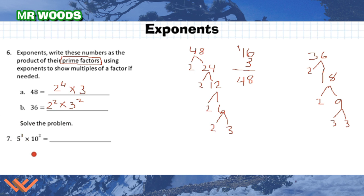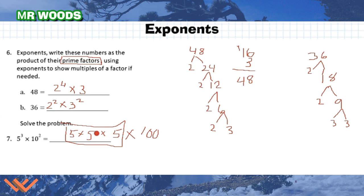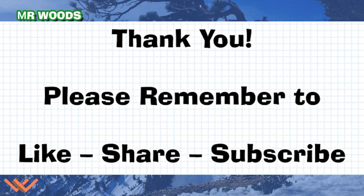So my answer for 5 cubed times 10 squared is 12,500. Thank you for your time. Please remember to like, share, and subscribe to Mr. Woods Teaches. And remember to be a math person — all you have to be is a person that does math.